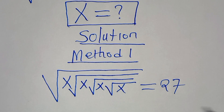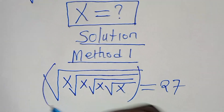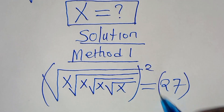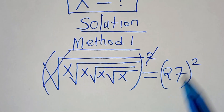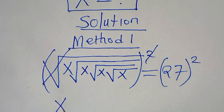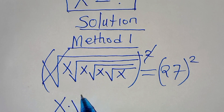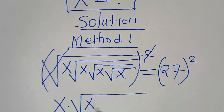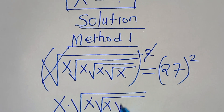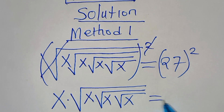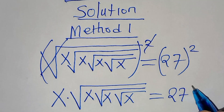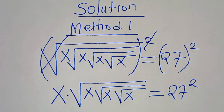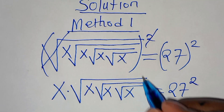The first step is to square both sides, so that we can eliminate the first square root sign. Now we have x multiplied by the square root of x, multiplied by the square root of x, multiplied by the square root of x. This is equal to 27 squared. The next step is to square again on both sides.